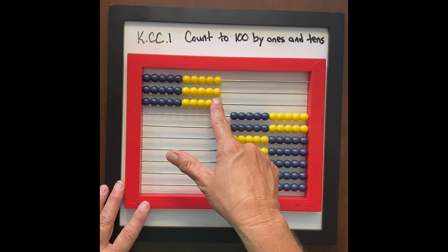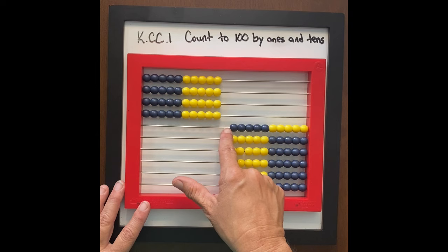Let's slide over a group of 10. What do we have now? 3, 10. Let's do another group of 10 — 4, 10.